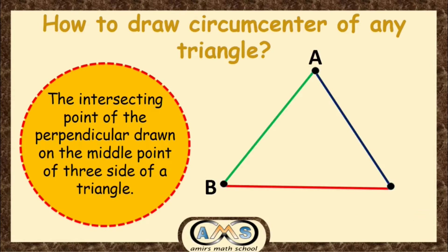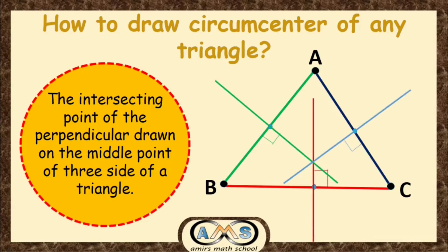This is our triangle ABC. We know how to draw the midpoint. First, draw the midpoint of AC, then AB, and then BC, and draw the perpendicular at each midpoint — first one, second one, and third one. Here we draw the perpendiculars and we know how to draw them. The point of intersection of perpendiculars drawn on the midpoints of the three sides — these three perpendiculars intersect at this point. This point is our circumcenter of triangle ABC.